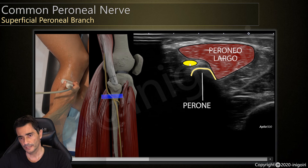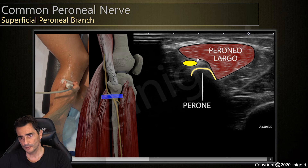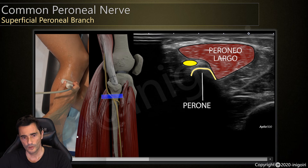The peroneal tunnel is the entrance just below the peroneus longus muscle and above the head of the fibula. At this level we are still following the common peroneal nerve.